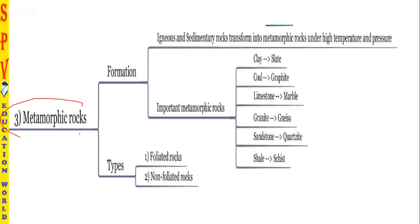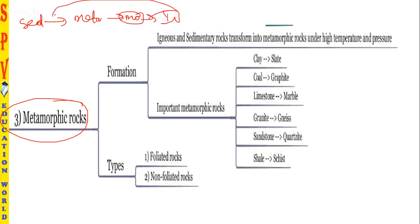Now we come to metamorphic rocks. Metamorphic rocks represent a transition between sedimentary and igneous rocks. Sedimentary rocks, under high pressure and temperature, form into metamorphic rocks. These metamorphic rocks can then melt into magma under very high temperatures, which cools and solidifies back into igneous rocks. Igneous rocks, in turn, weather and become sedimentary rocks again — this is the continuous cycling process of rock formation.